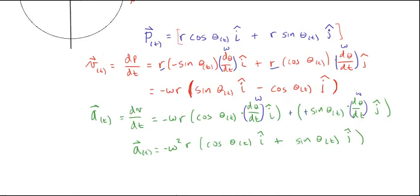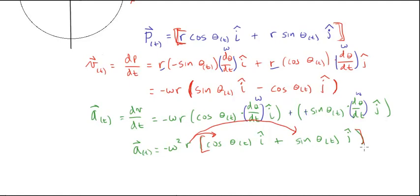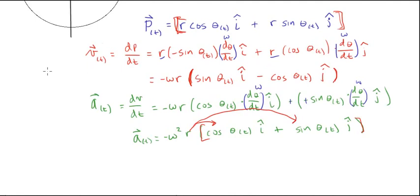After multiplying through by the minus sign and factoring out another omega, I'm left with: a = −ω²·r [cos(θ(t)) î + sin(θ(t)) ĵ]. If I distribute that r to both terms, I end up with r·cos(θ(t)) î + r·sin(θ(t)) ĵ — which is exactly the position vector p. So: a = −ω²·p. Most of the heavy lifting is done.